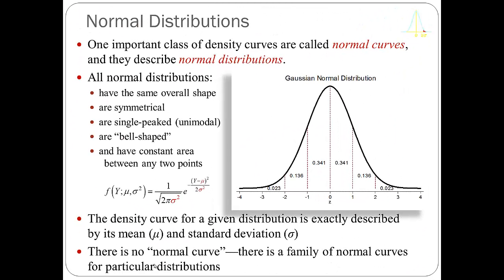This particular distribution is a normal distribution. When people talk about the normal distribution, there really is no single normal distribution. There's a family of normal distributions, each defined by a particular mean and standard deviation. With an infinite number of means and standard deviations, there's an infinite number of normal distributions. The Gaussian normal distribution has a mean of 0 and a standard deviation of 1.